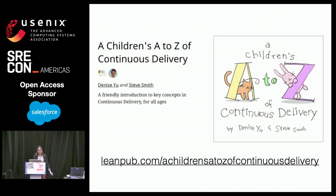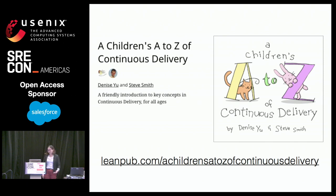I'm also currently working on a book with my friend Steve Smith. So if you have any nephews or nieces or children in your life who might be writing enterprise software soon, please consider buying a children's A to Z of continuous delivery for them.